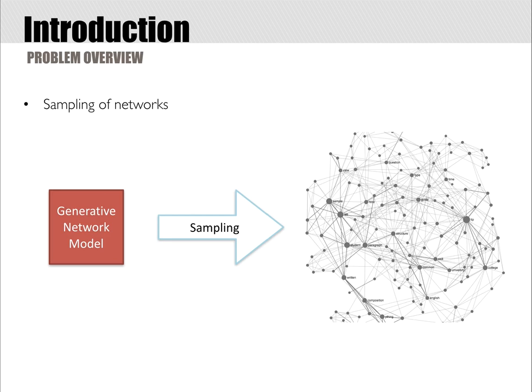Network sampling is the process of using a generative network model to randomly create a network. Network sampling is a powerful tool that facilitates tasks such as hypothesis testing and sensitivity analysis. However, sampling of networks with correlated vertex attributes remains a challenging problem.